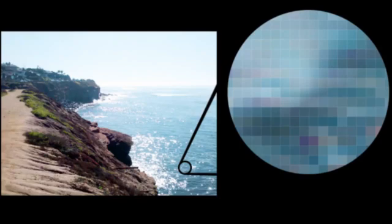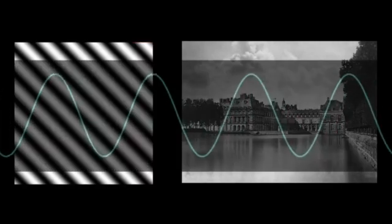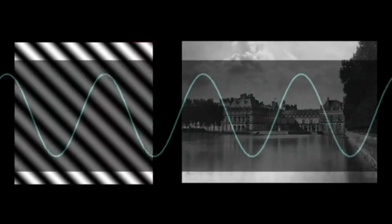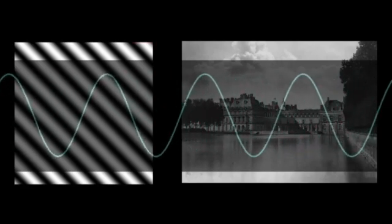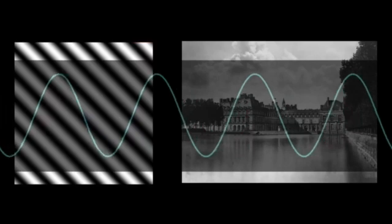To understand the algorithm that was used, we first need to realize that we can make any image, from this, all the way to this, or the Mona Lisa, or whatever, using sine waves. If that seems super weird, don't worry, it did to me too, at first, because it doesn't even seem like images and these functions mix. But here's how they do.